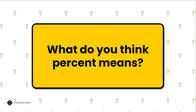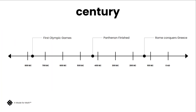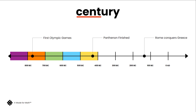Let's look at other words that have cent in it. Century. Cent means hundred. Century means one group of one hundred. In modern English, it's taken on a new meaning: one group of a hundred years.